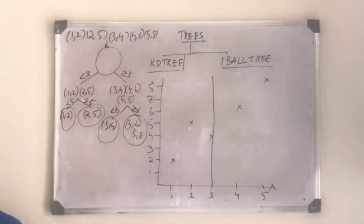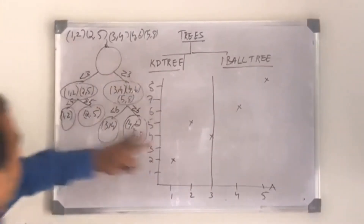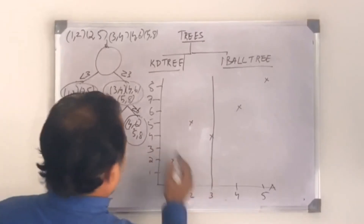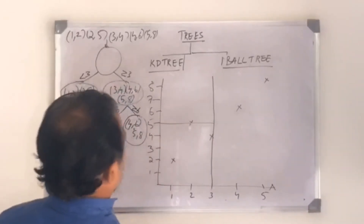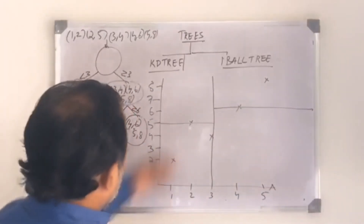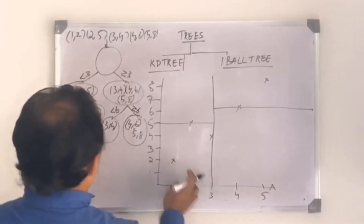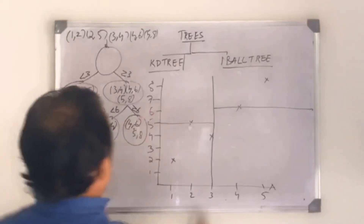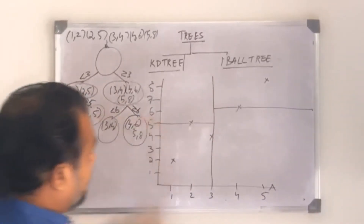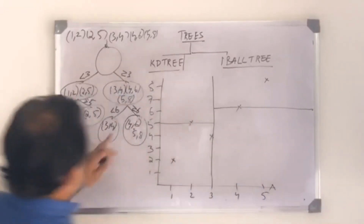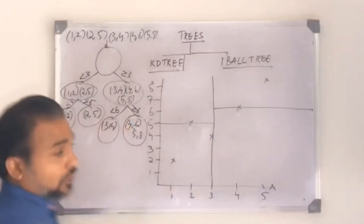So my tree is formed beautifully. In the coordinate space: less than Y=5 on the left gives one data point — (1,2) — and greater than or equal to Y=5 gives (2,5). On the right side, less than Y=6 gives one data point — (3,4) — and greater than or equal to Y=6 gives two data points: (4,6) and (5,8).